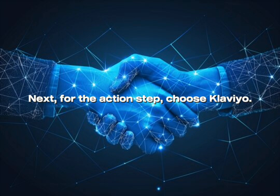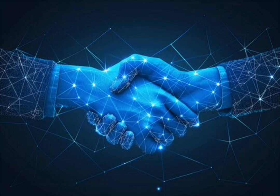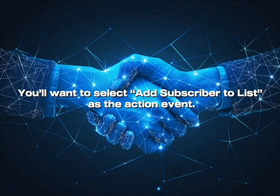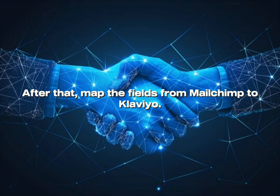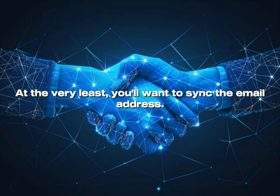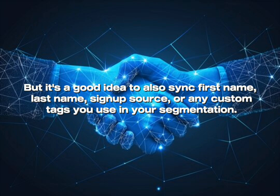Next, for the action step, choose Klaviyo. You want to select Add Subscriber to List as the action event. Just like with Mailchimp, connect your Klaviyo account and pick the list or segment you want to send the new contact to. After that, map the fields from Mailchimp to Klaviyo. At the very least, you want to sync the email address, but it's a good idea to also sync first name, last name, signup source, or any custom tags you use in your segmentation.